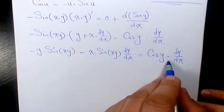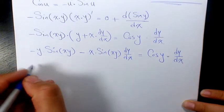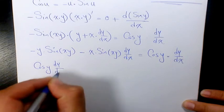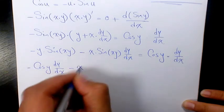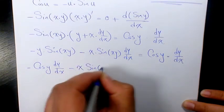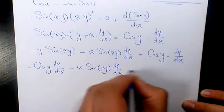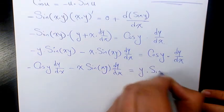And then this part goes to the left hand side. It's going to be cosine y dy over dx minus x times sine xy dy over dx equals y times sine xy.